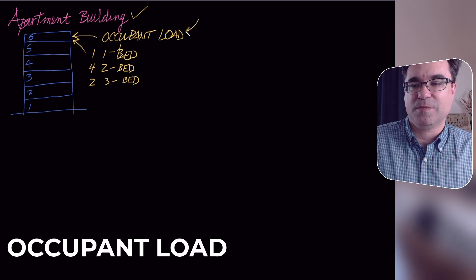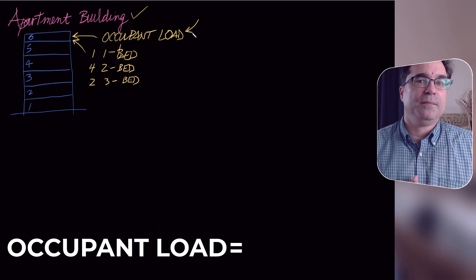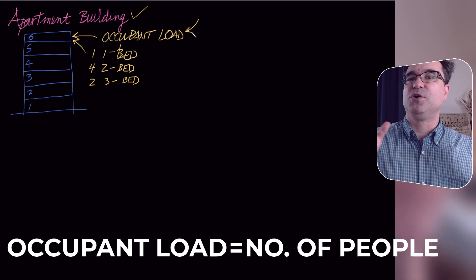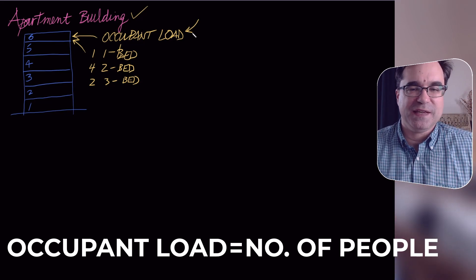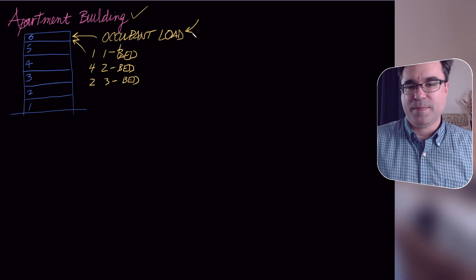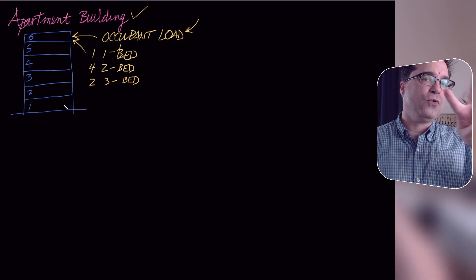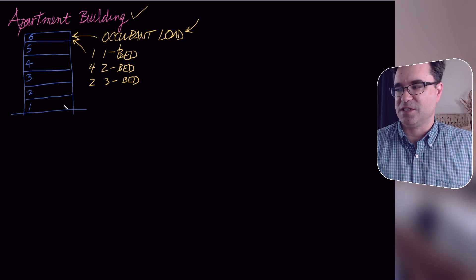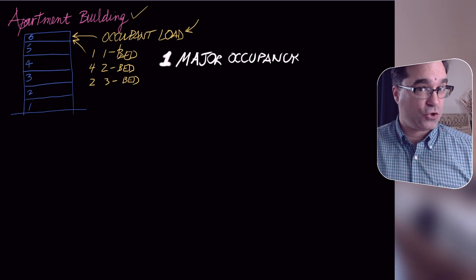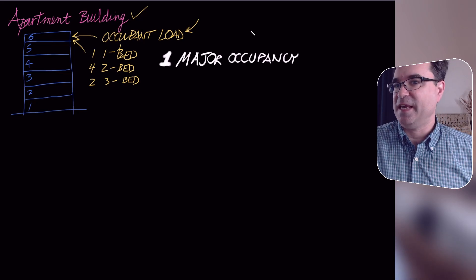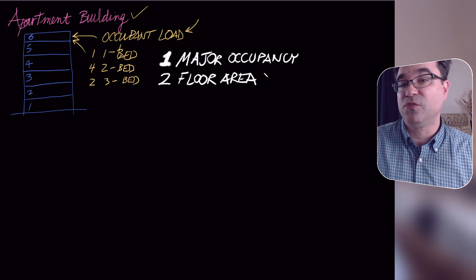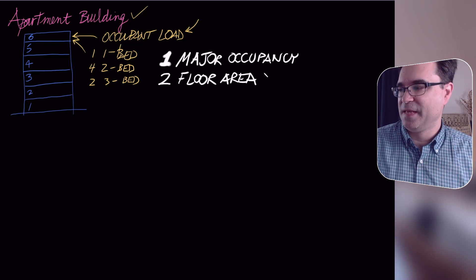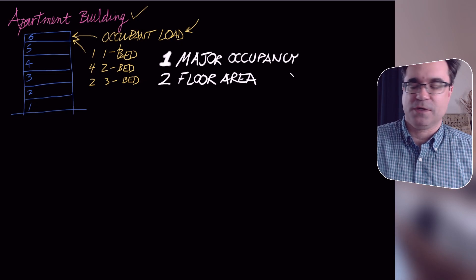Remember, the occupant load is the correct building code terminology for the number of people expected in a space. There are two ingredients required to correctly determine the occupant load for any space: the major occupancy for that space and the floor area of that space.